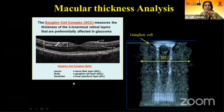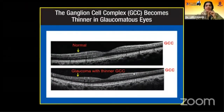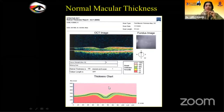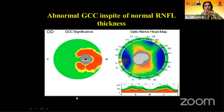The third component is macular thickness analysis. GCC is composed of NFL plus GCL plus IPL. This becomes thinner in glaucomatous eyes, and we are able to detect glaucoma at an early stage with the GCC OCT. Normal macular thickness looks like this. In the case of glaucoma, the RNFL is thinned out and the curve goes into the red zone.